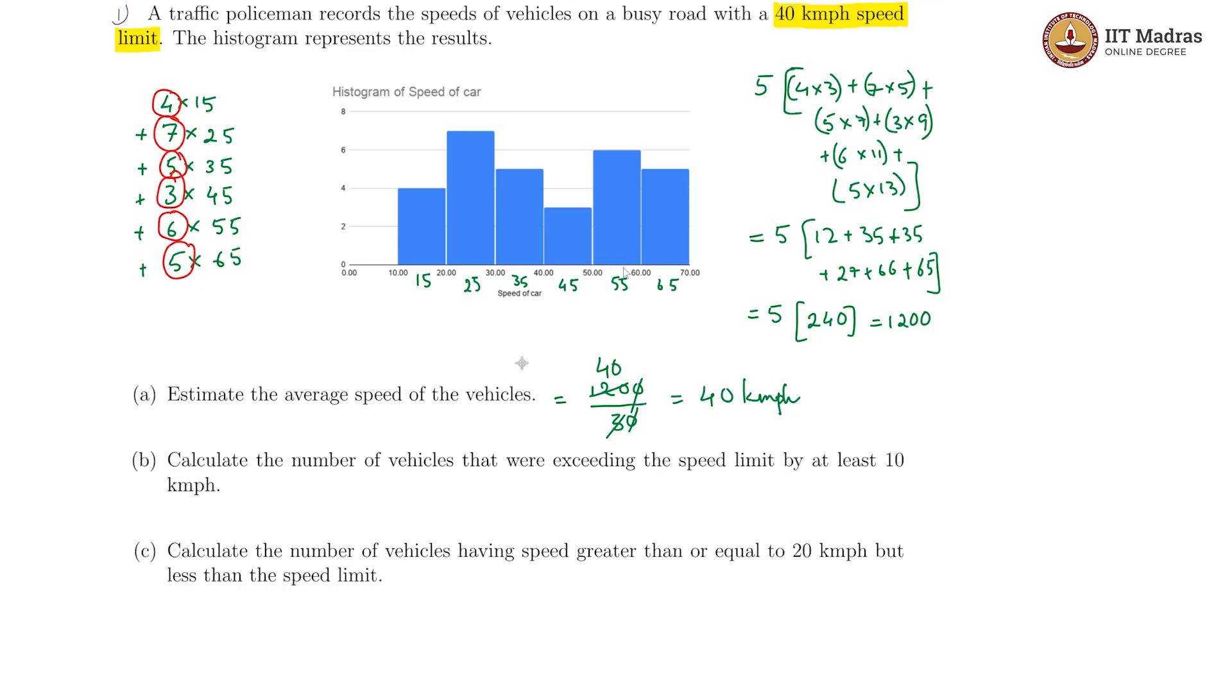That would be from 50. We are interested in the number for this class and this class which as we can see is 6 and 5. We get 11, so 11 vehicles.